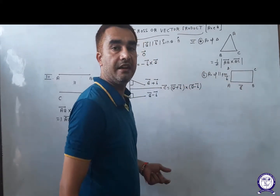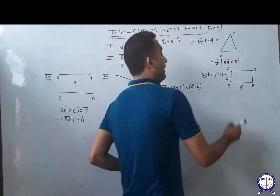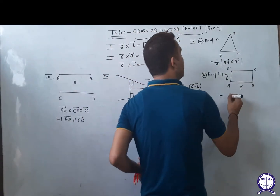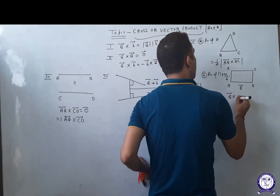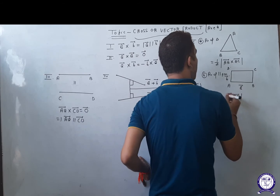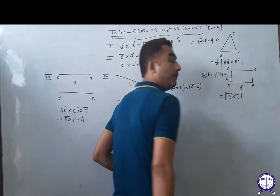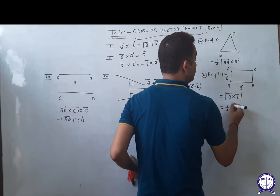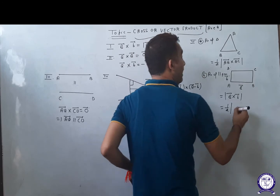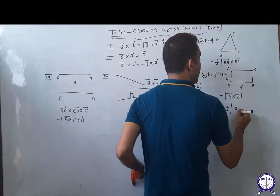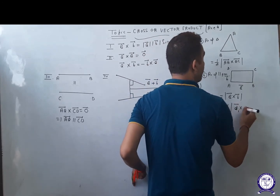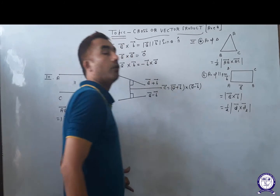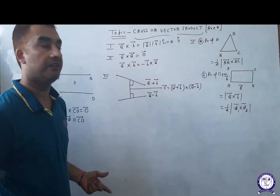Area of parallelogram: if adjacent sides are given to you, then area will be the magnitude of the CROSS of both sides. But if diagonals are given to you, then it will be half the magnitude of the CROSS of both diagonal vectors.